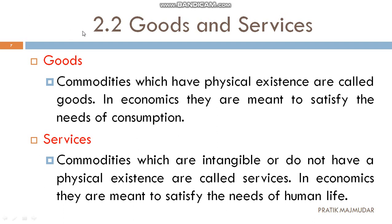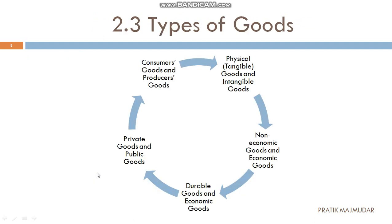That is the major difference between goods and services. Now there are different types of goods, as shown in this chart. First, that is physical goods and intangible goods — the goods which are physical in nature will be termed as physical goods, and the goods which are intangible in nature will be known as intangible goods.